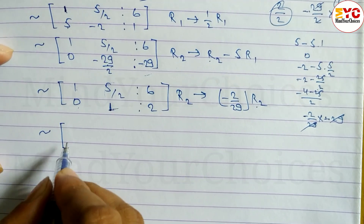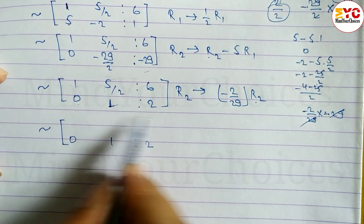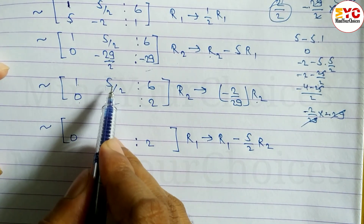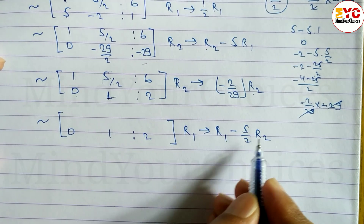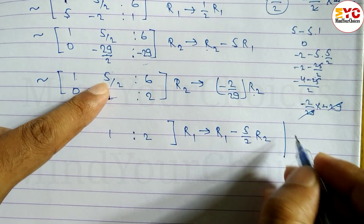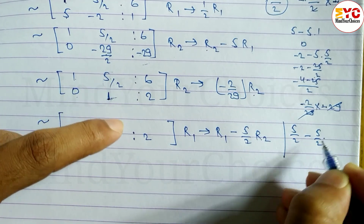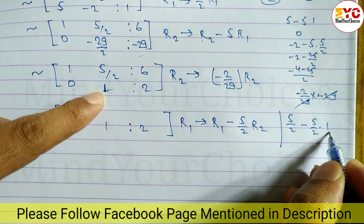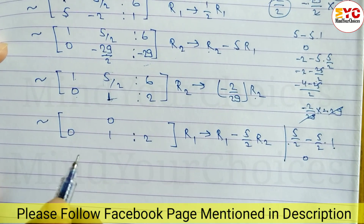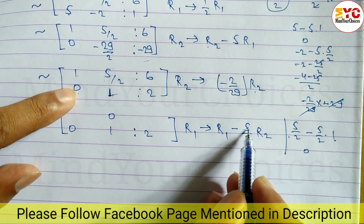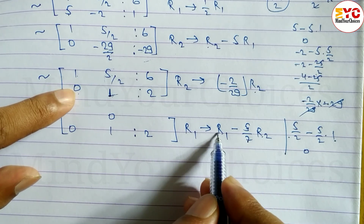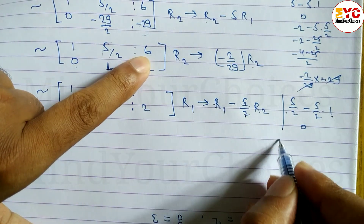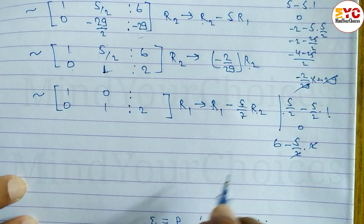Now R2 is: 0, 1, 2. Next, R1 → R1 minus (5/2) times R2. For the first element: 1 minus (5/2) times 0 equals 1. For the second element: 5/2 minus (5/2) times 1 equals 0. For the third element: 6 minus (5/2) times 2 equals 6 minus 5, which equals 1.